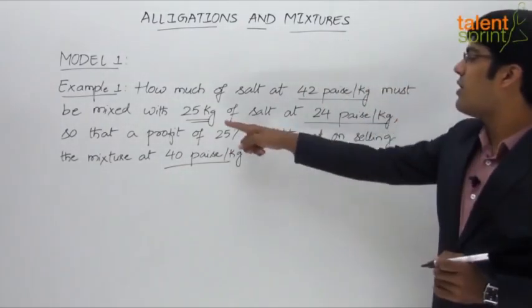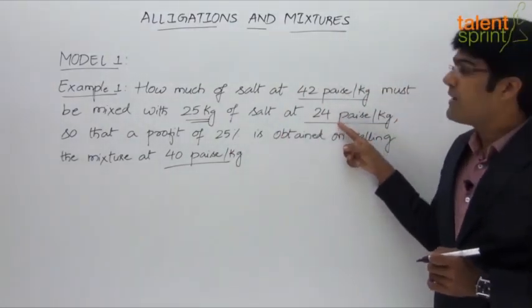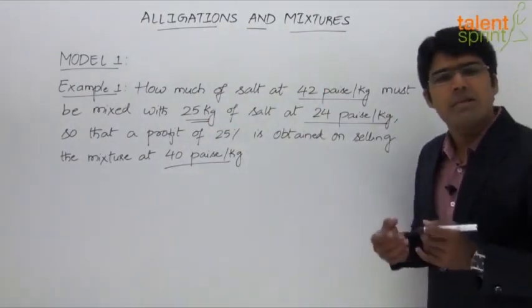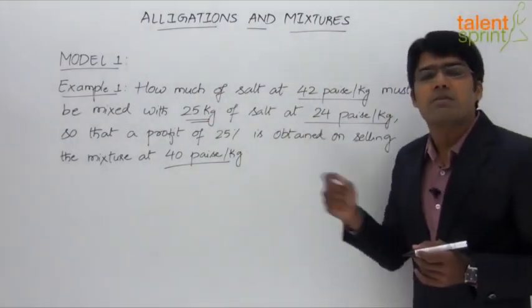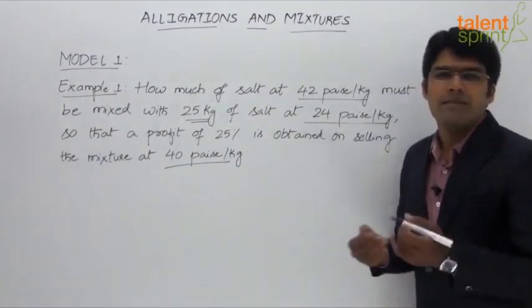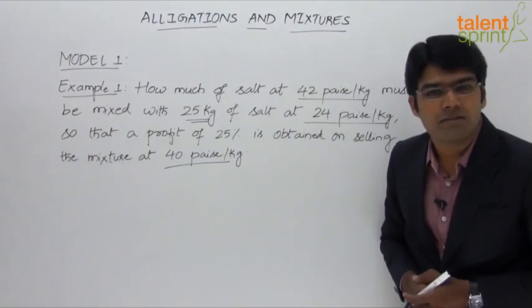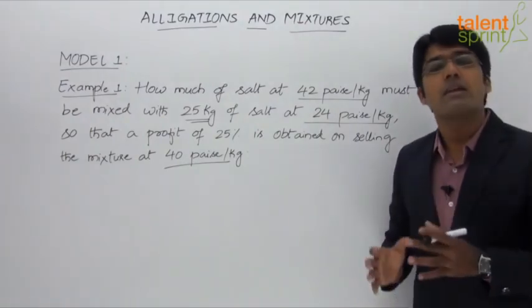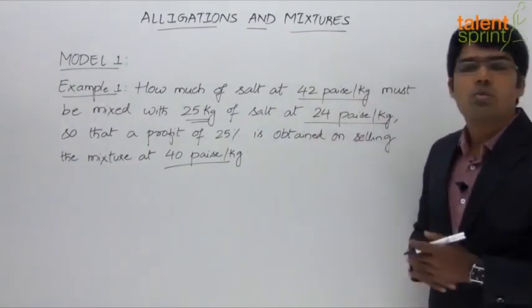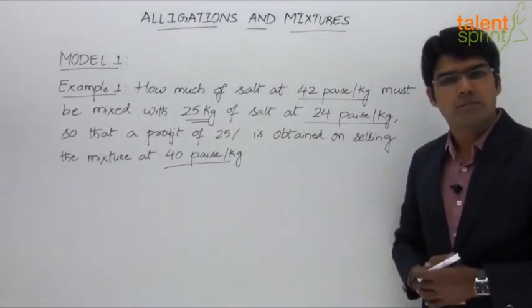The quantity of the cheaper quality of salt is given, and we have to find the quantity of the dearer quality of salt. This is based on finding the ratio — once we get the ratio of the two quantities, we can easily find one quantity when the other is given. So let us find the ratio in which the two varieties of salt have to be mixed.